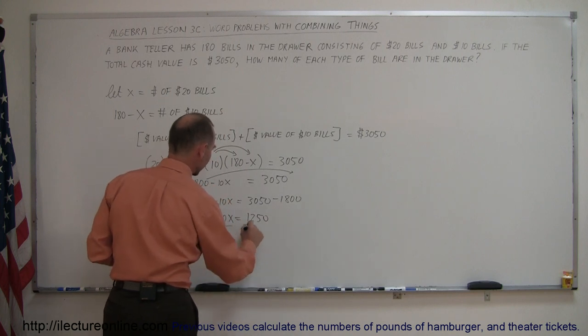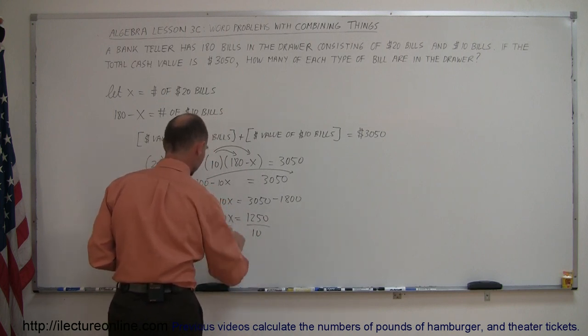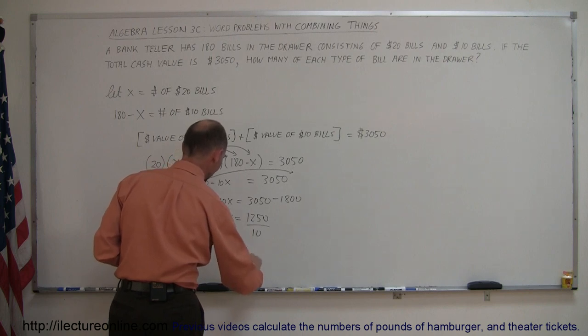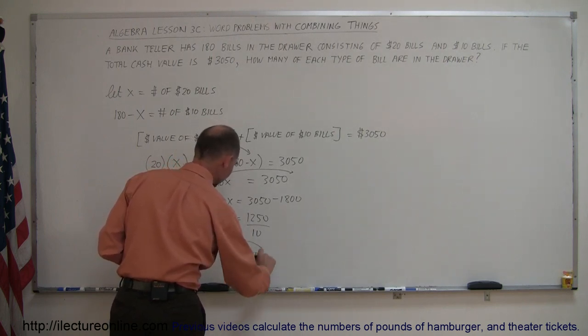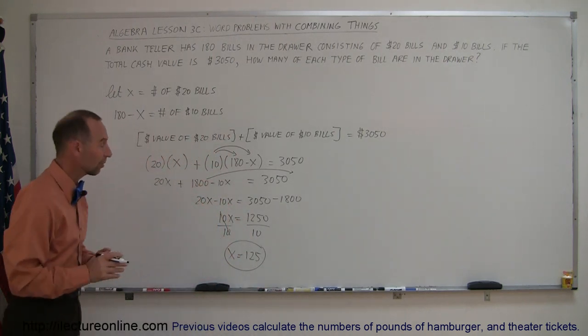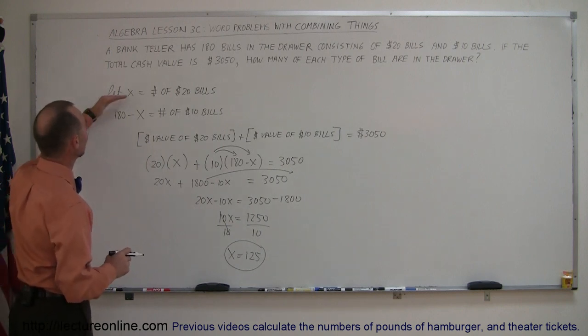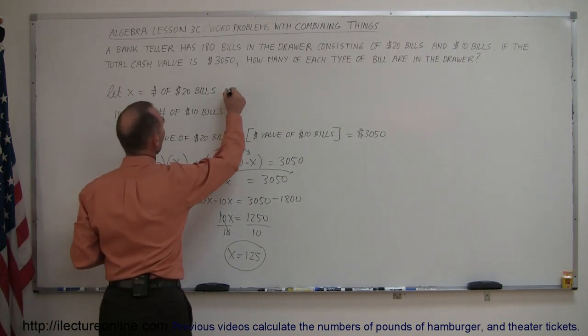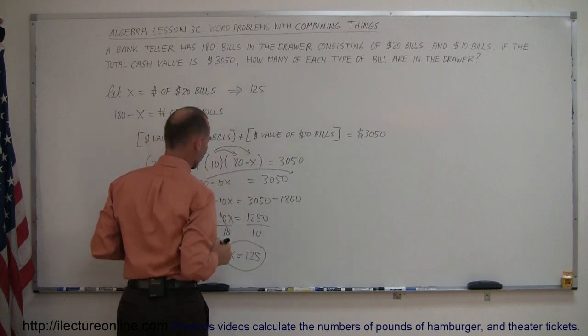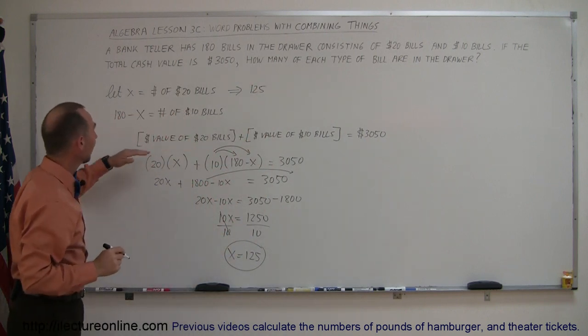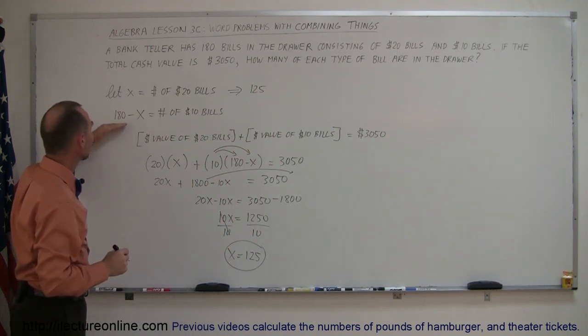So now we divide both sides by the numerical coefficient of x. That cancels out, and x equals 125. Now we'll go back and see what x was defined as. x was defined as the number of $20 bills, which means we had 125 $20 bills, and 180 minus 125...